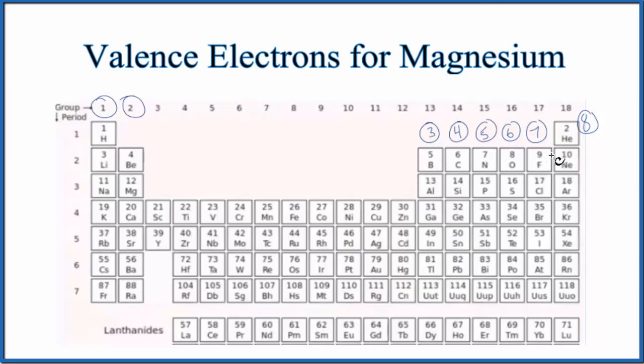The first is just to look at the periodic table. So on the periodic table, here's magnesium, and it's in group 2. That means it has two valence electrons. Calcium, strontium, barium, they all have two valence electrons. They're in group 2.